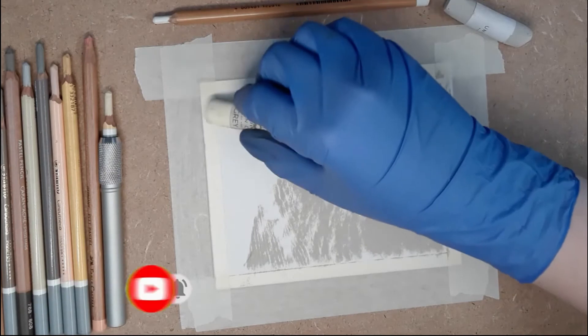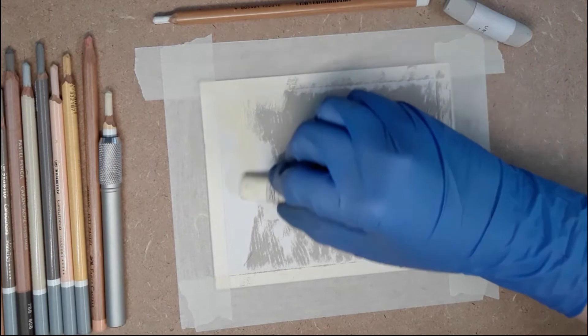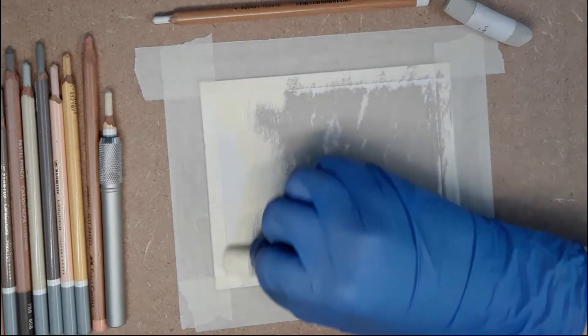We start by blocking in the colors for the under layer. For these I'm using a darker beige and a lighter one. Where the fur is darker I use the first one and where my highlights are I am going over it with the lighter one.